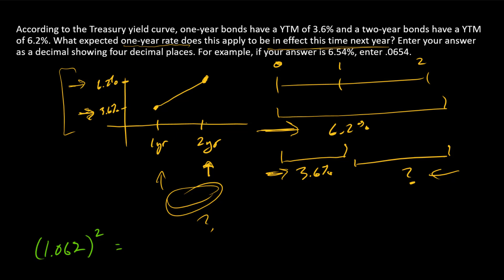Going back to our equation, we're going to replicate the 6.2% over two years with a series of two investments. The first year, we have 1.036, and the second year, we invest at some unknown rate, call it R2. These have to be equal according to expectations theory. All we've got to do now to finish this problem is solve for R2.